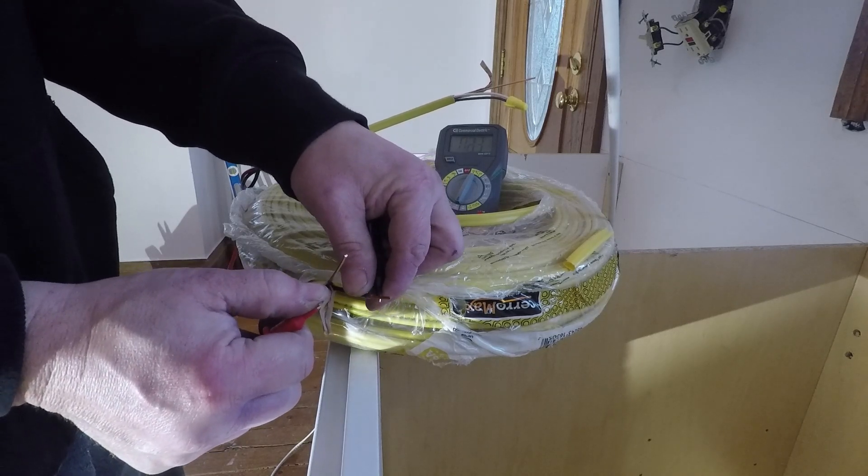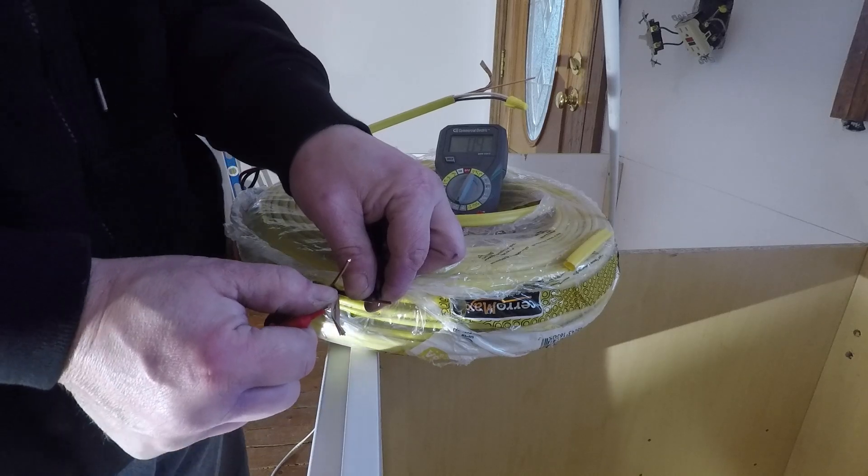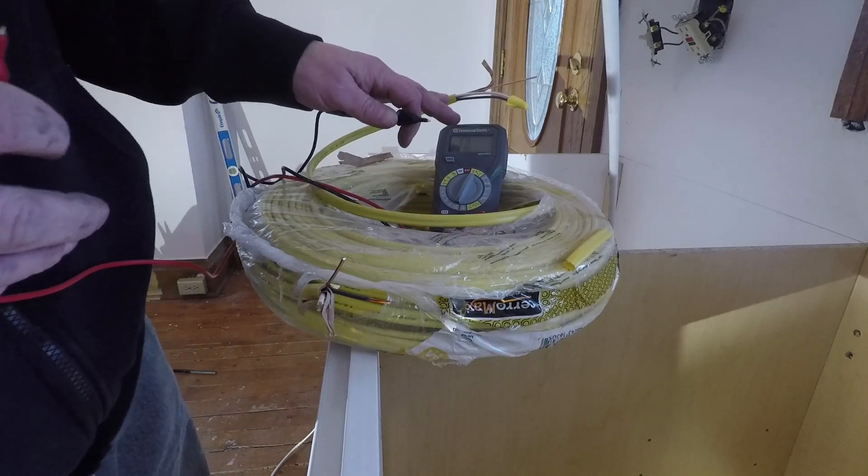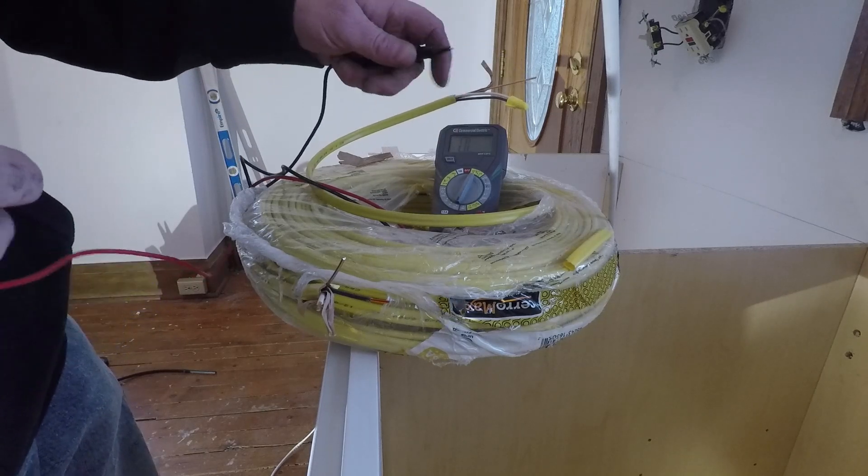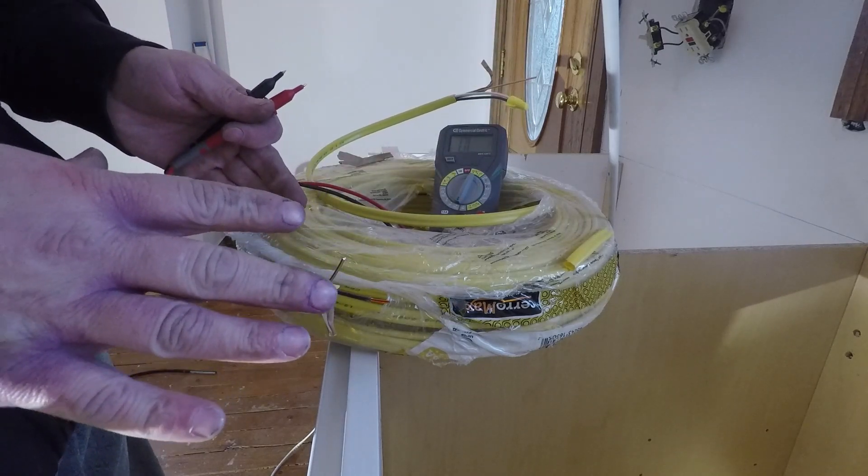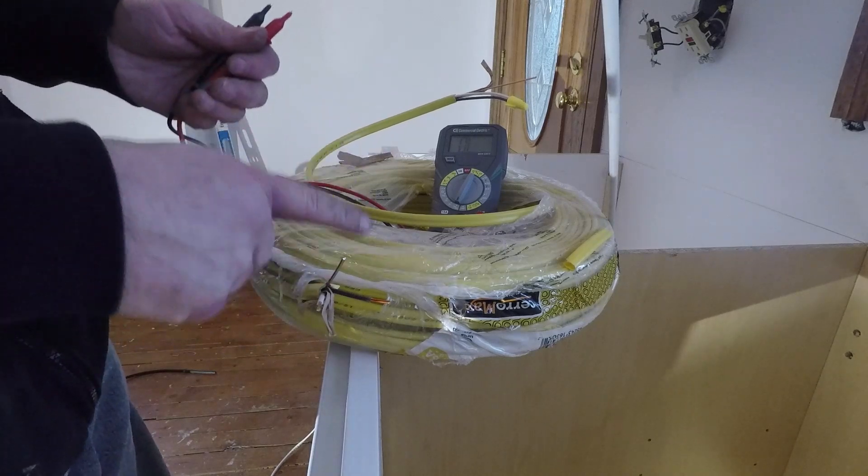Alright. Now I can see just by the noise and a little bit of resistance there - there's no resistance - and I have a circuit all the way through here. So I'm sure that there's no break in that line.